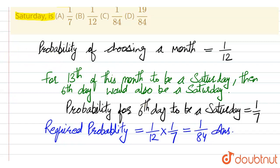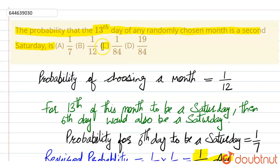This is the final answer: 1 divided by 84. Correct option is option number C.